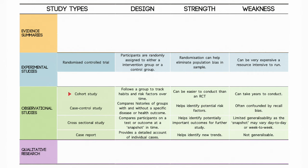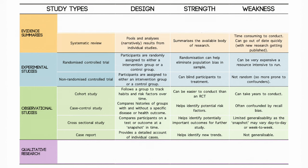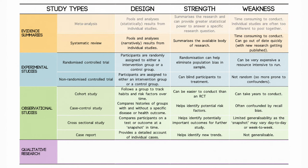Importantly, none of these study designs involve the investigators administering an intervention, like in a clinical trial, which is the only way you could infer any kind of causality in research. You've also got studies that seek to summarise other studies that all look at similar groups or interventions — these are known as systematic reviews. A systematic review that applies special statistical analyses to quantitatively pool the results of individual studies is known as a meta-analysis.